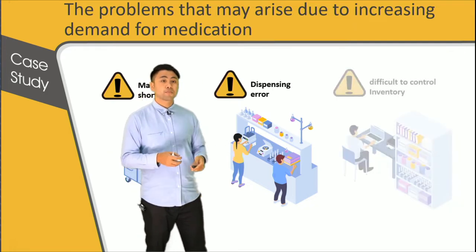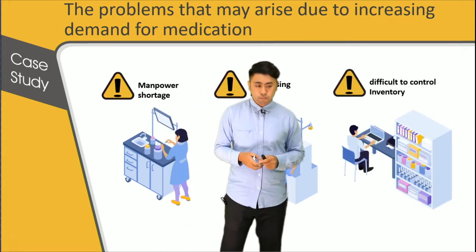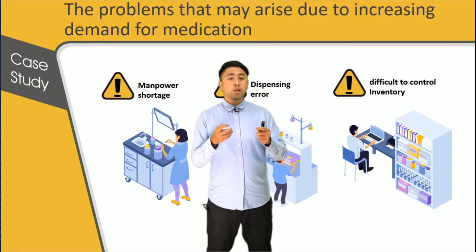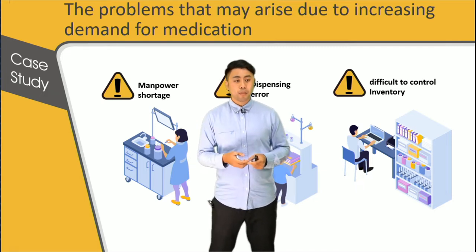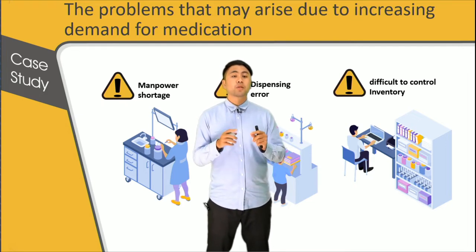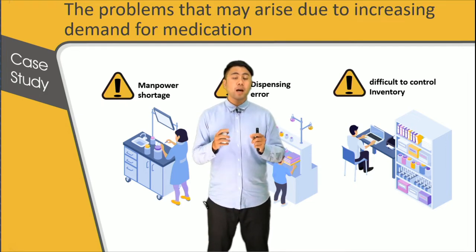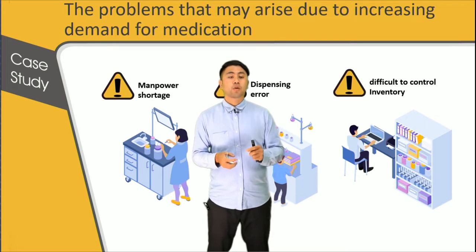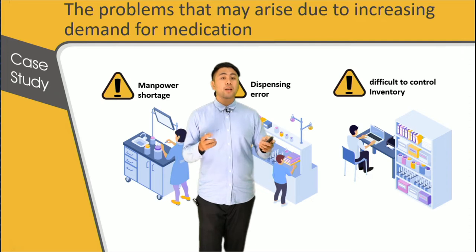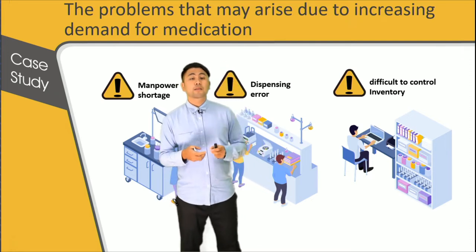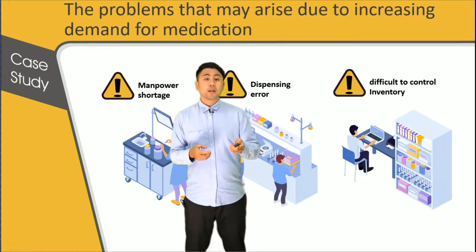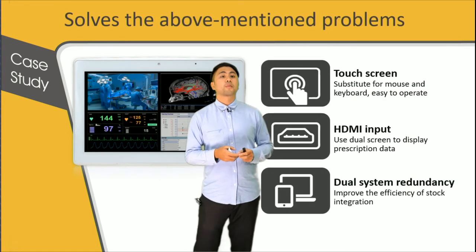And third, difficult to control inventory. With advancement of technology, the medicine types are increasing. And for hospitals and clinics, how to control a numerous quantity of medicine, and how pharmacists record the medicine inventory are the problems that need to be solved. And IEI's BISW-19C ULT4 is the product that can solve the above-mentioned problems.